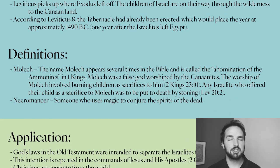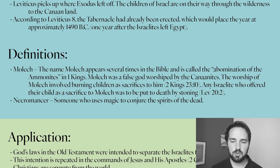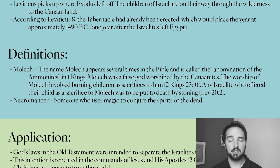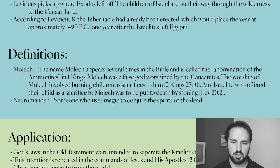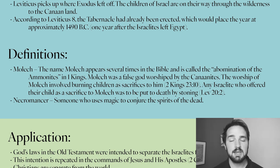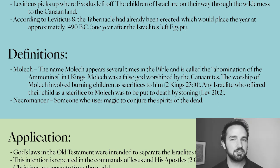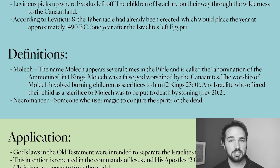Moving into our definition section, the first term we need to define is Molech. The name Molech appears several times in the Bible and is referred to as the abomination of the Ammonites in 1 Kings. Molech was an idol worshipped by the Canaanites, and the worship of Molech involved burning children as sacrifices to him, according to 2 Kings chapter 23, verse 10. Any Israelite caught offering their child to Molech was to be put to death, according to verse 2 of this chapter. The second term is Necromancer — someone who uses magic to conjure spirits of the dead.